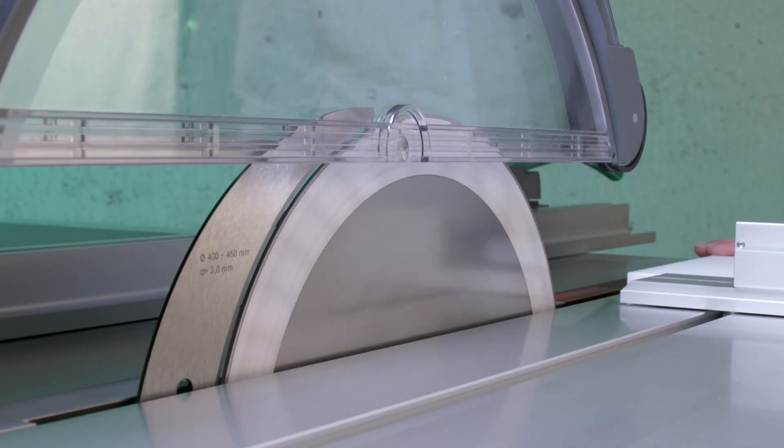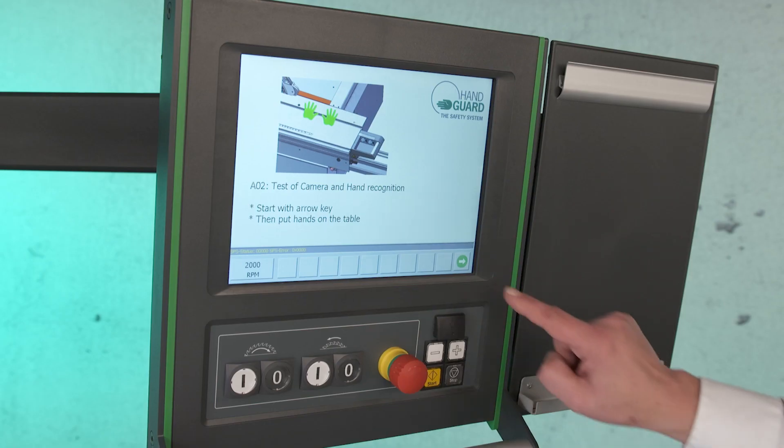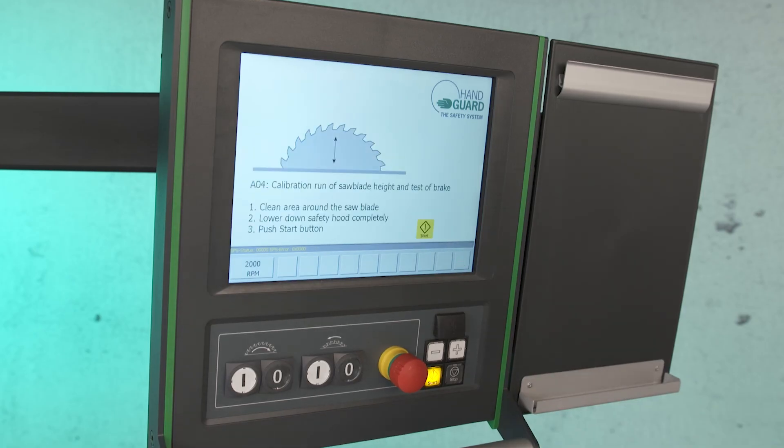I hope you got a lot of information about our Handguard sliding table saw of the next generation. The intelligent camera system will support your specialists, unskilled workers, and also the newcomers. Handguard has no limits on productivity and it will automatically train your workers for safer behavior around the sliding table saw. Your valuable workers will be protected and feel much safer.